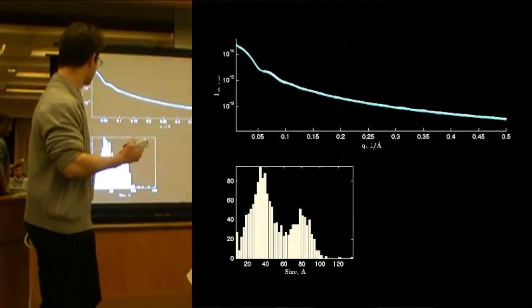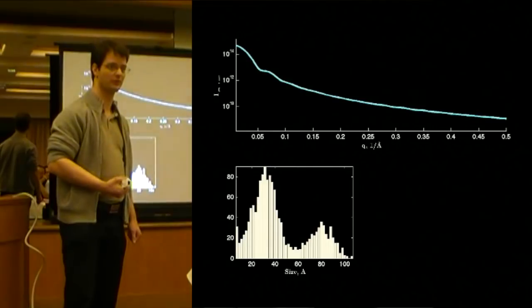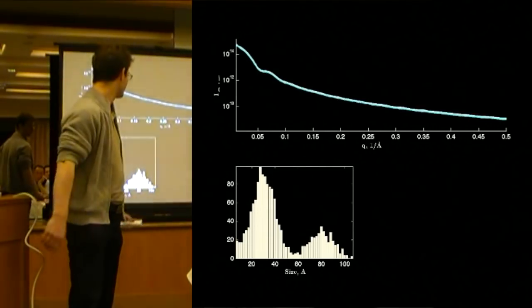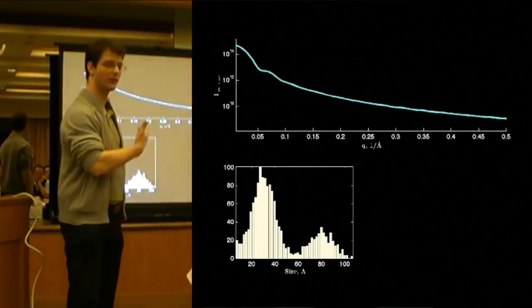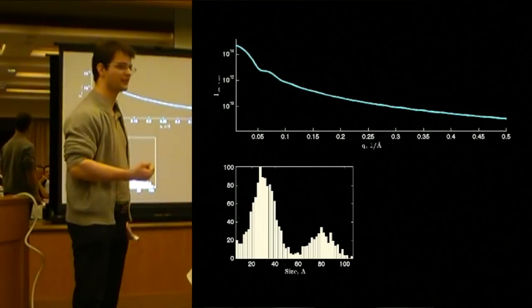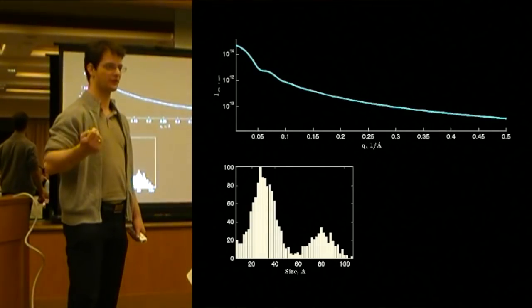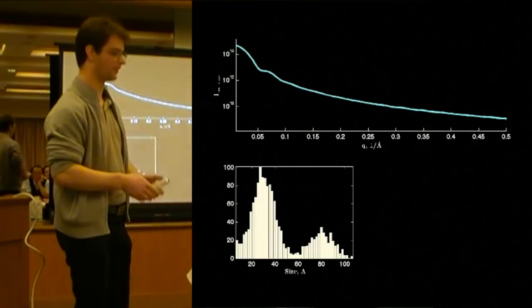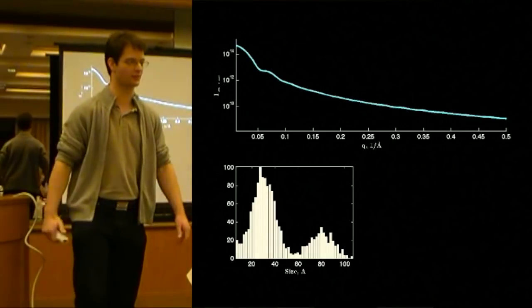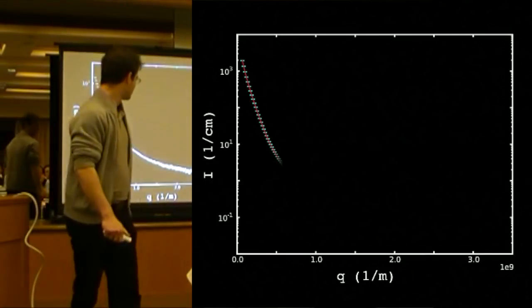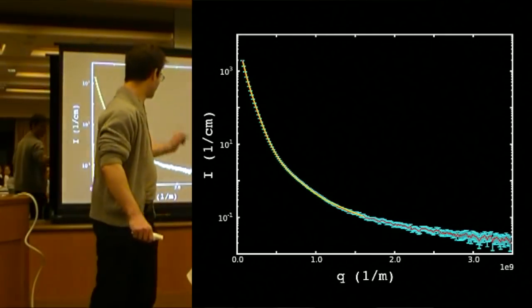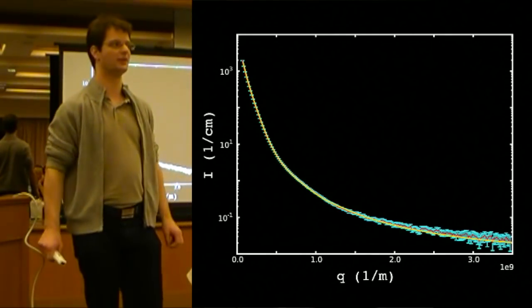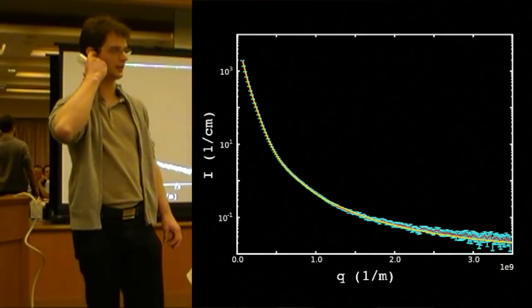This allows us to retrieve a particle size distribution for precipitous in our sample. And we can do this to within the uncertainty of our data so that we know that we've extracted all the information that we can from the scattering pattern. Which is emphasized over here. The yellow line is my fit and it fits well within the errors.